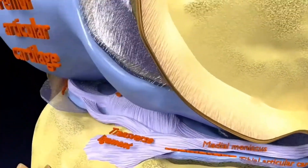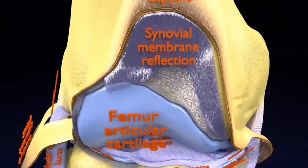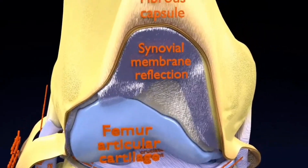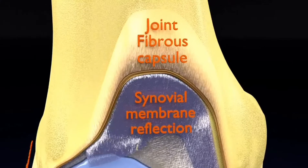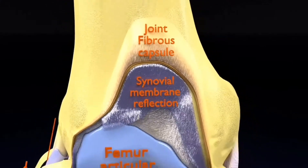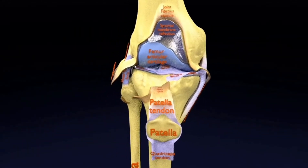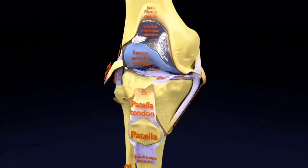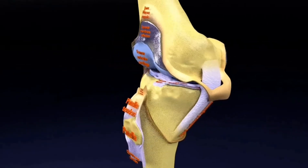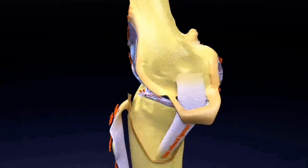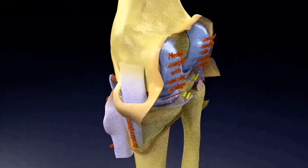The tibial or medial collateral ligament is a wide and flat ligament found on the medial side of the joint. Proximally, it attaches to the medial epicondyle of the femur. Distally, it attaches to the medial condyle of the tibia. It protects the medial side of the knee from being bent open by a stress applied to the lateral side of the knee.